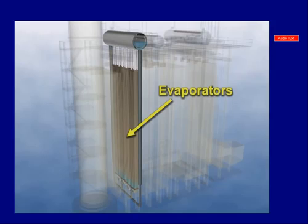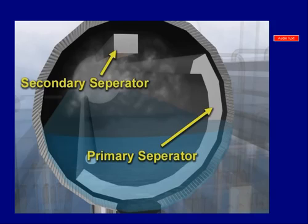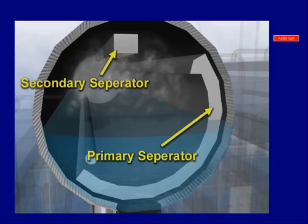As this steam-water mixture enters one of the three drums, it first passes through the primary steam separator, where water and steam are separated. Before leaving a drum, the steam passes through the secondary separator and leaves the drum through a saturated steam line.